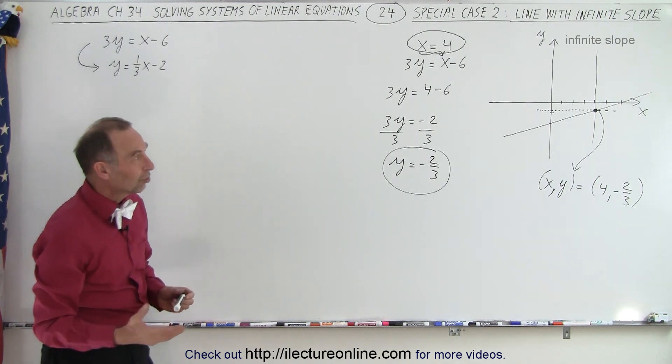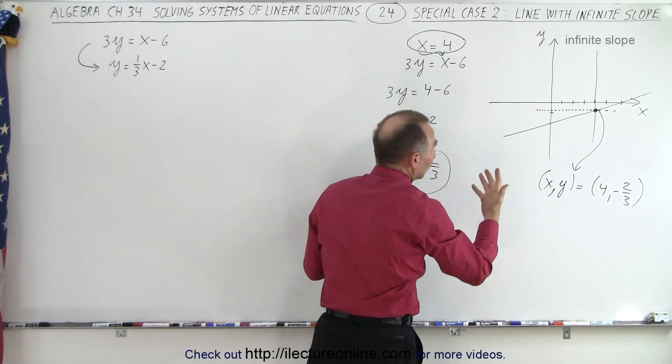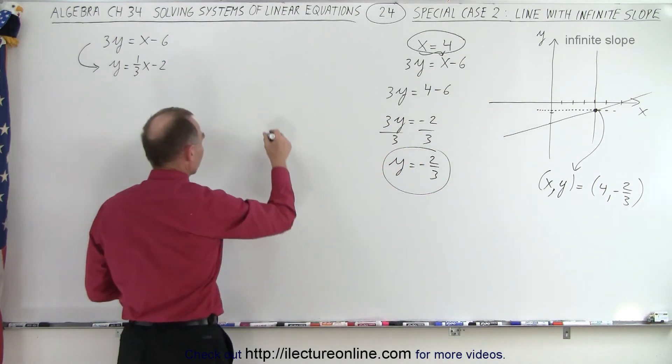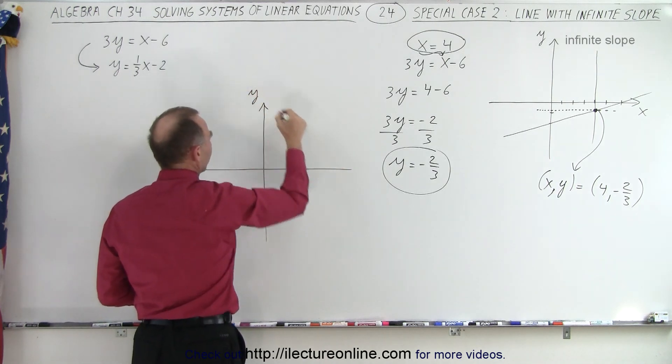So the question is, if you have an equation where you have x equals 4, which in essence has an infinite slope, how do you graph an equation like that? So that's a good question. So let's draw the x, y plane again.